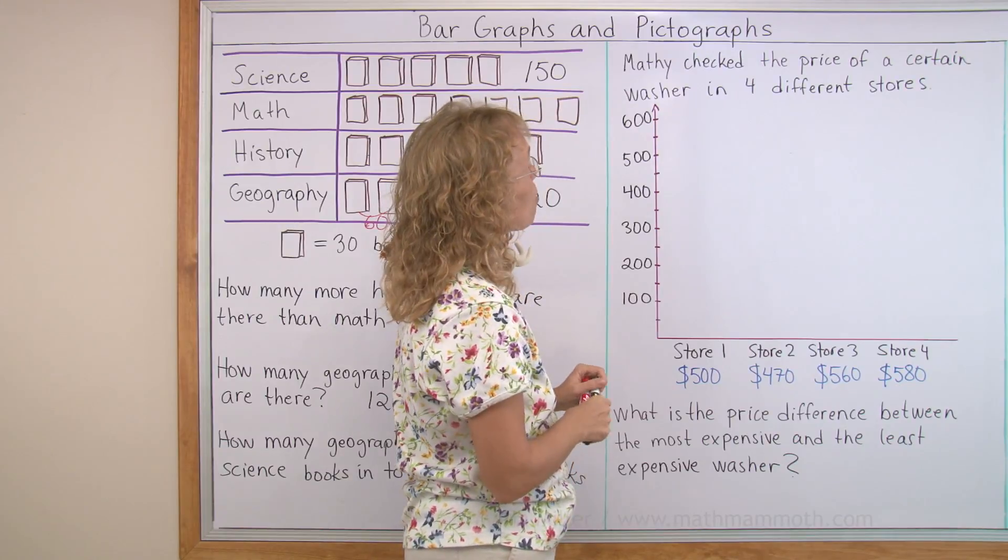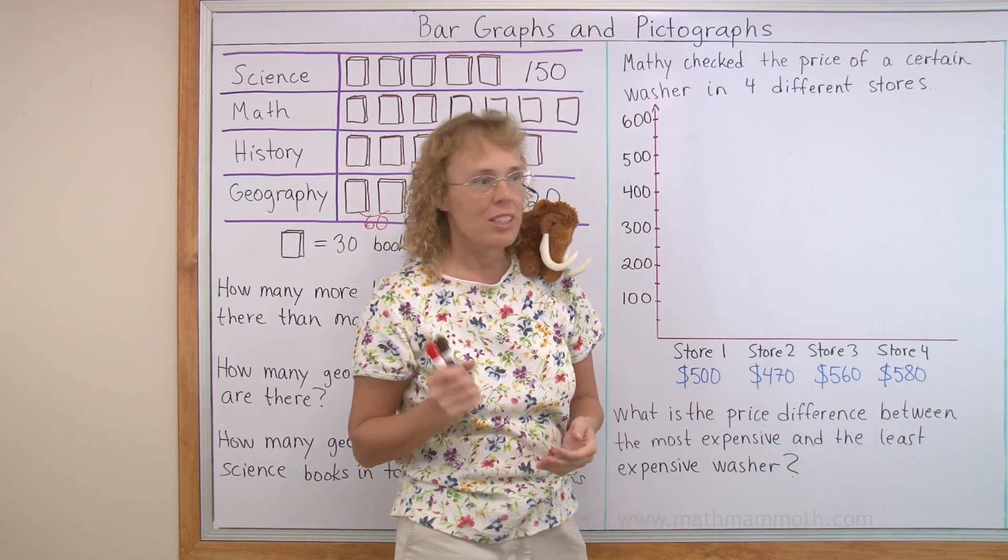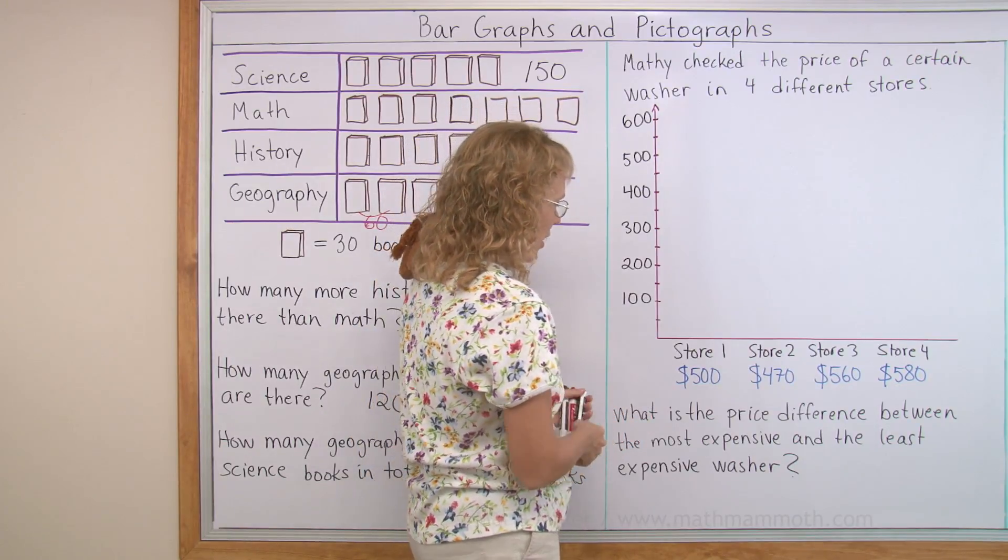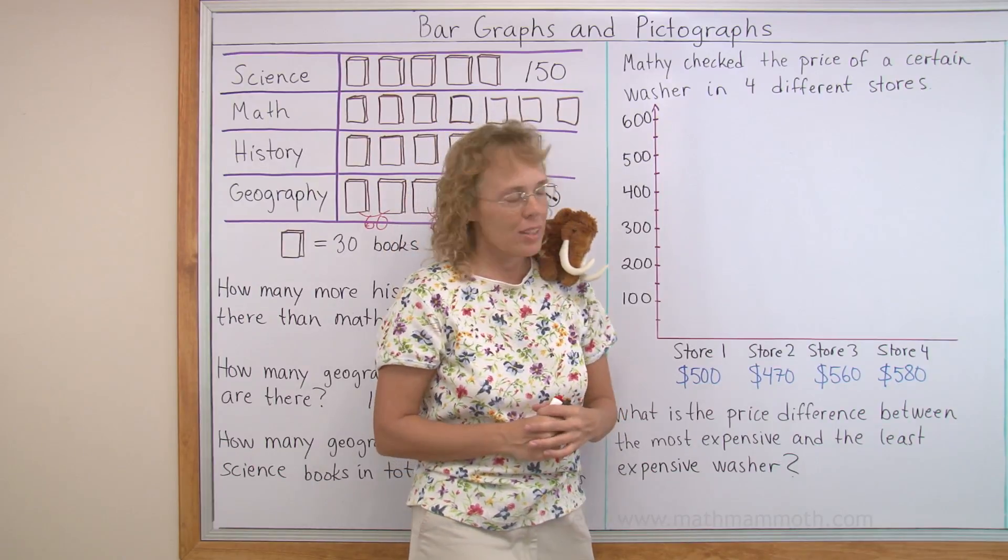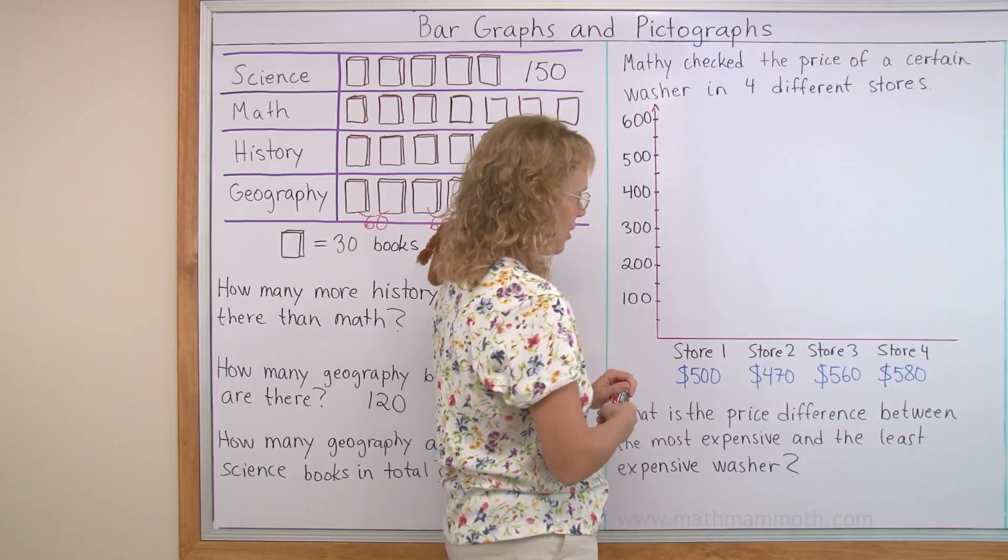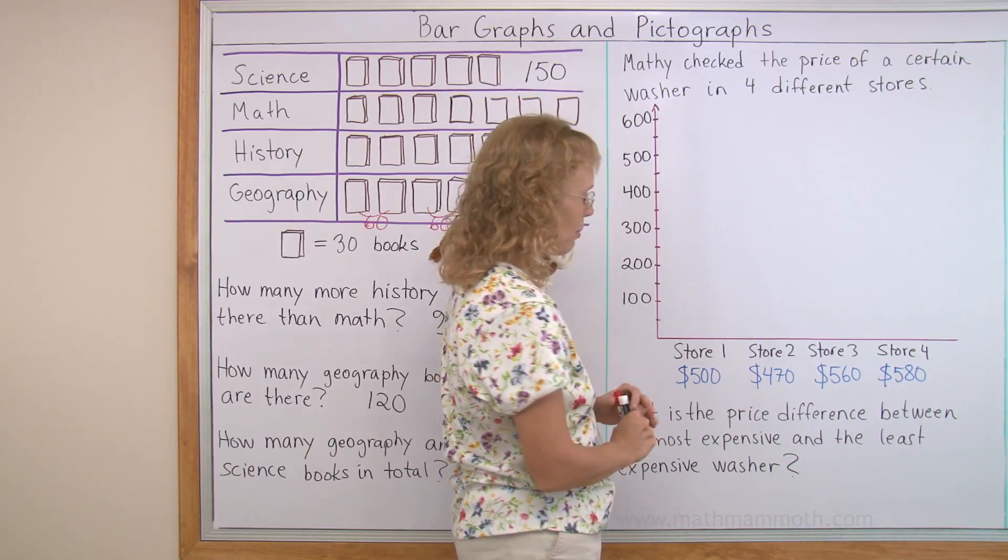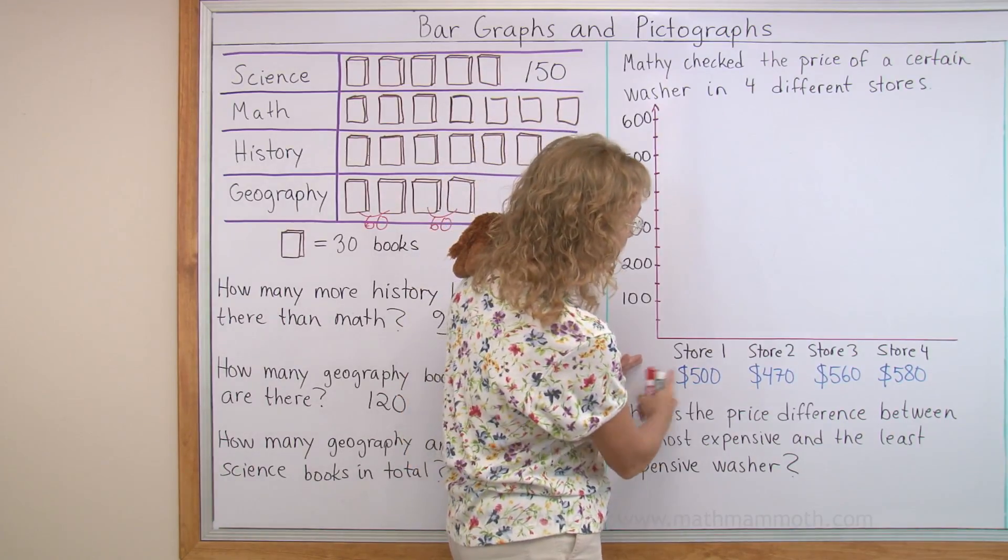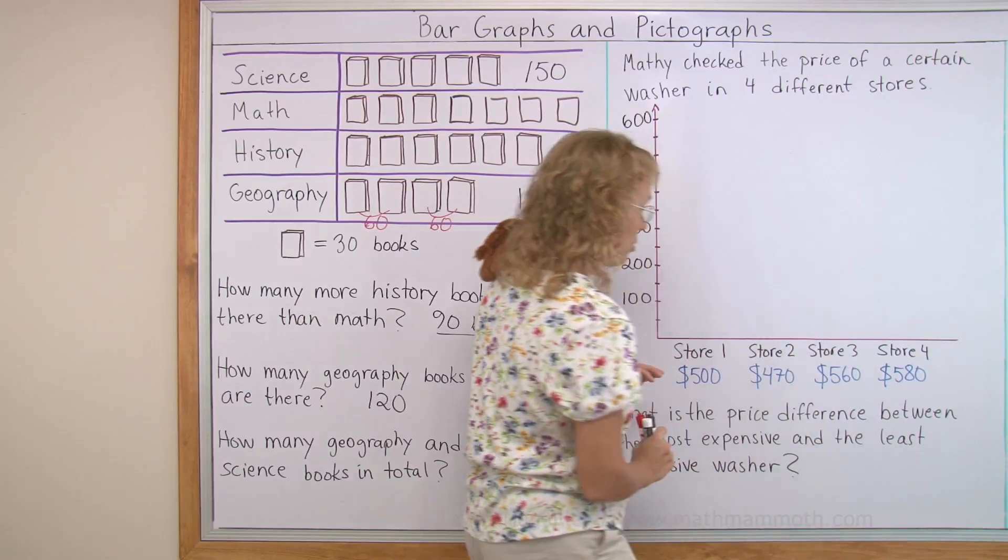Matthew checked the price of a certain washer, washing machine, in four different stores. Yeah, that's a good thing to do if you're gonna buy an expensive washer. You want to check the price and find where it might be the cheapest. And here are the prices that he found in four different stores.